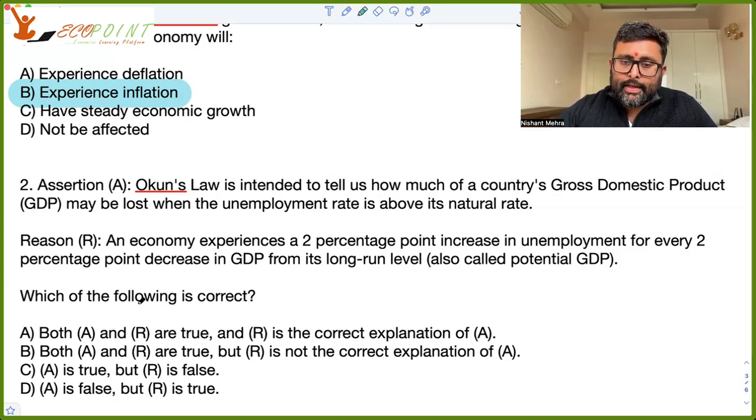Assertion is Okun's law is intended to tell us how much of a country's GDP may be lost when unemployment rate is above its natural rate. This is true. So Okun's law is the relationship between GDP and unemployment rate. If unemployment rate is going to be more than the natural rate of unemployment, then output is going to be less than the potential level of output. So there is a negative relationship. If unemployment is more, output is less. And the reasoning which they have given is, so A is true.